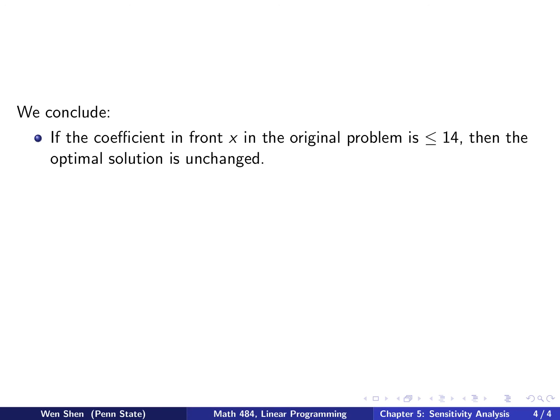We now can conclude. If the coefficient in front of that x variable in the original problem is less than 14, so the original problem is the maximization problem, and the coefficient is taking the negative sign of it, so if that is less than negative 14, then our optimal solution is unchanged.